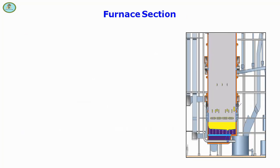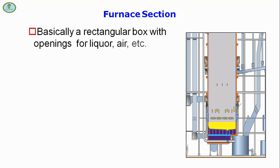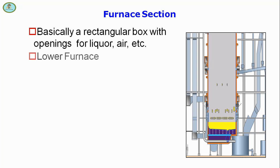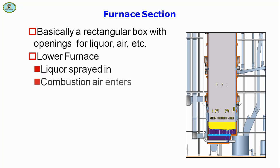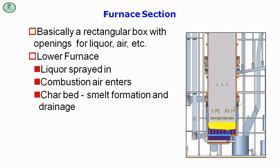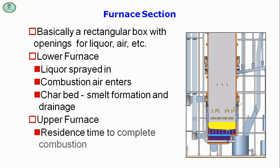The furnace section is basically a rectangular box with openings for liquor, air, and other connections. In the lower furnace, liquid is sprayed in, combustion air enters, and char bed smelt formation and drainage occur. In the upper furnace, residence time allows completion of combustion, and heat absorption cools the gases.